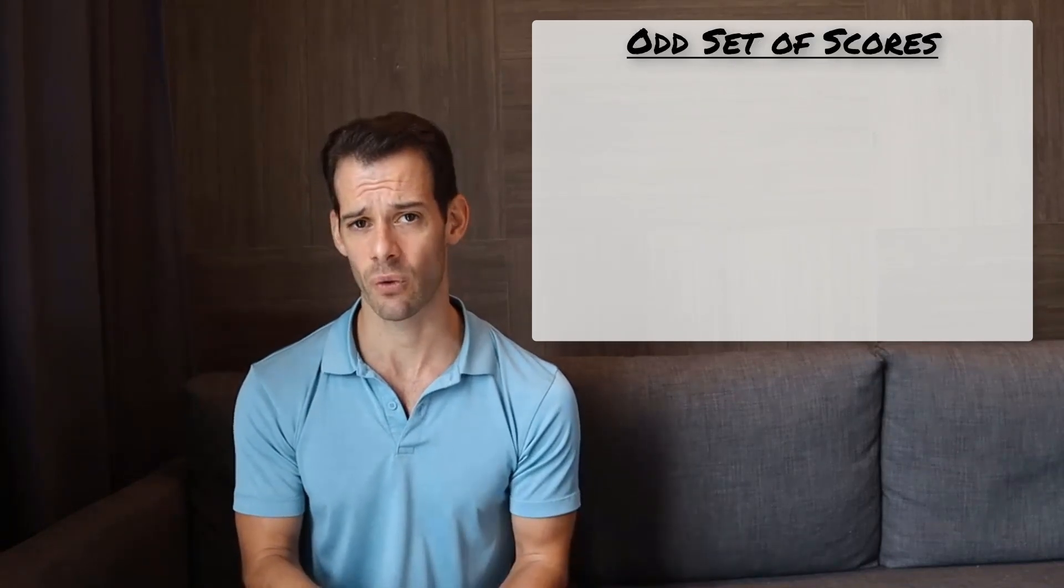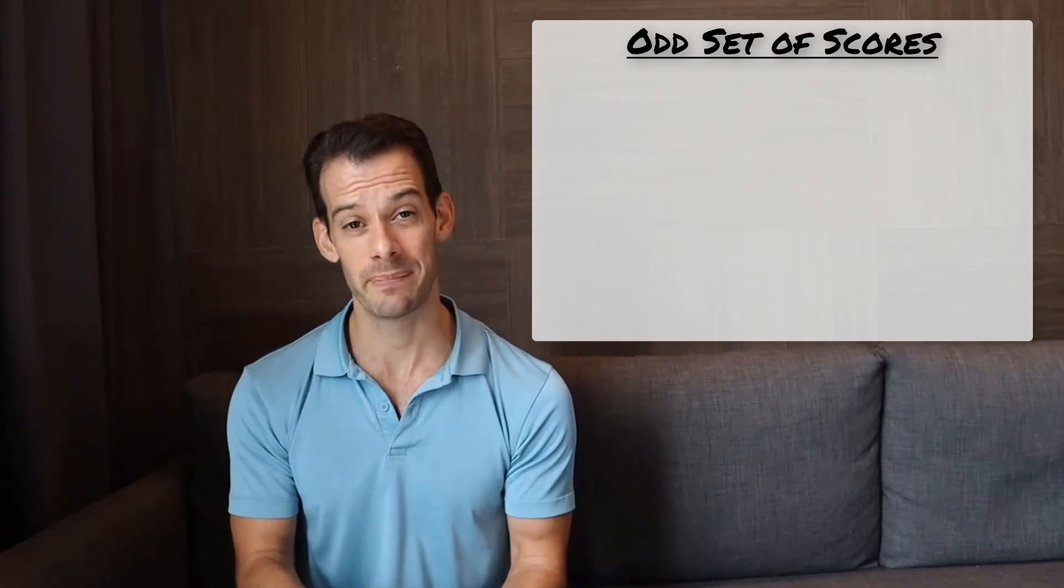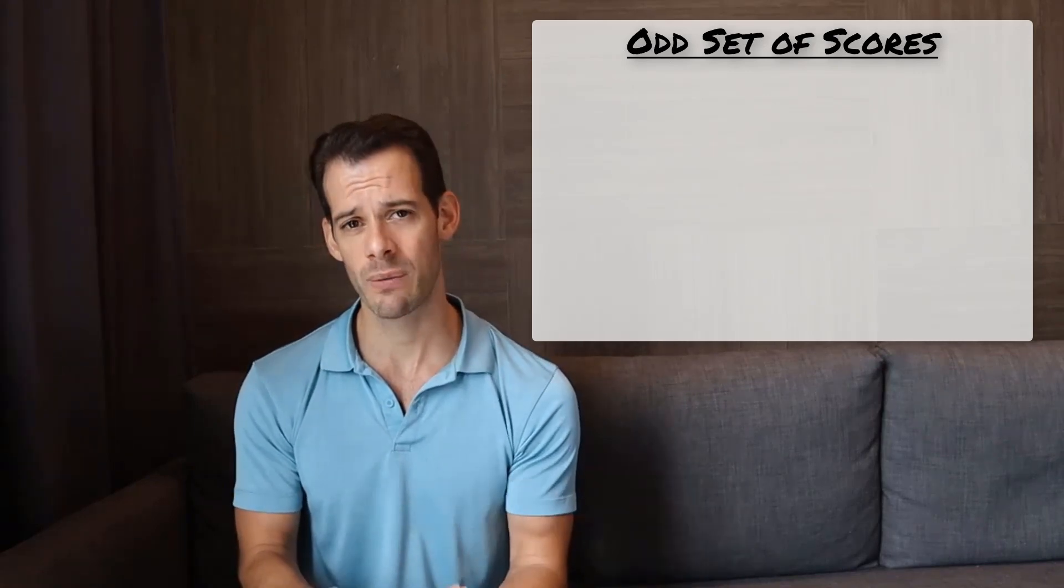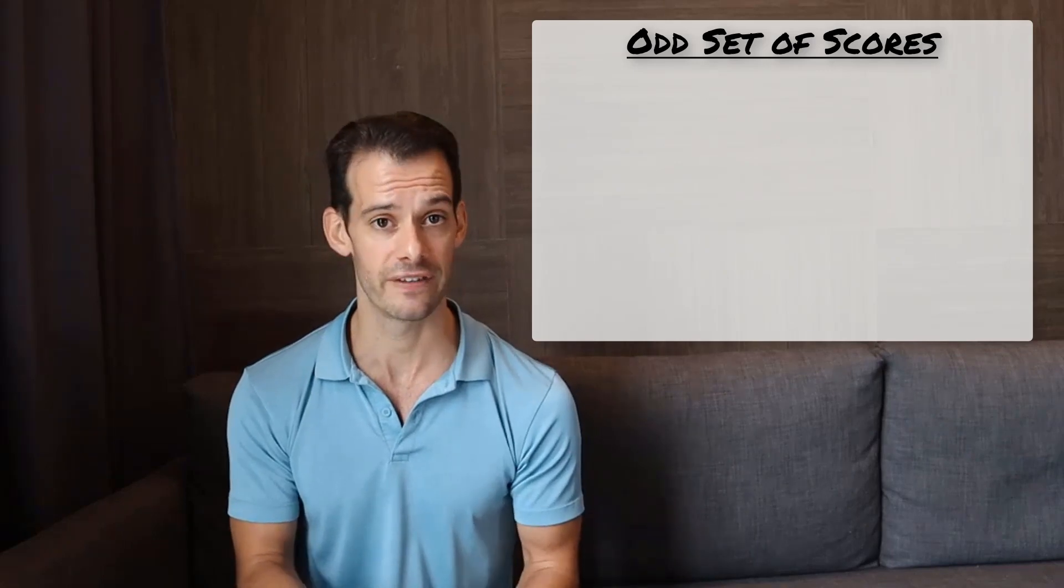But in the case of an odd number of scores, we can see that our median is going to be one of our values. And that means we might want to include it as being part of the lower and upper halves of the data.